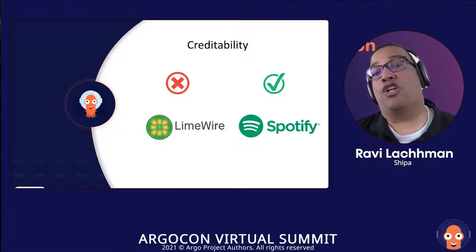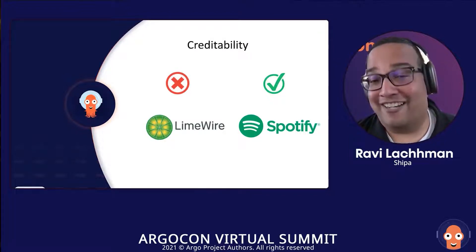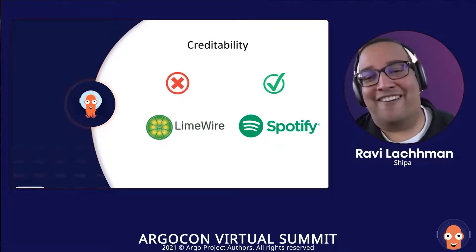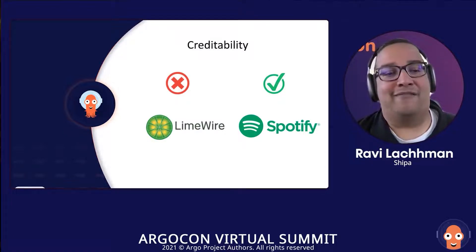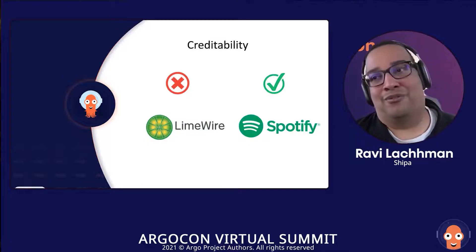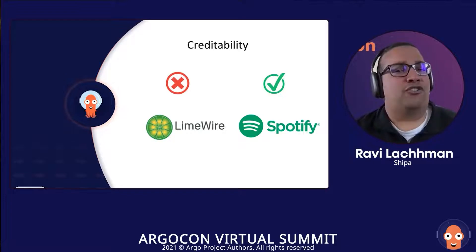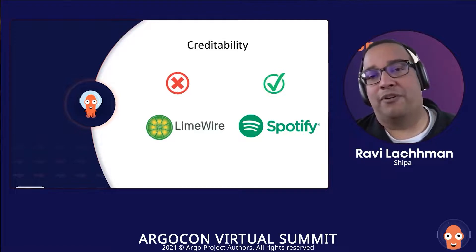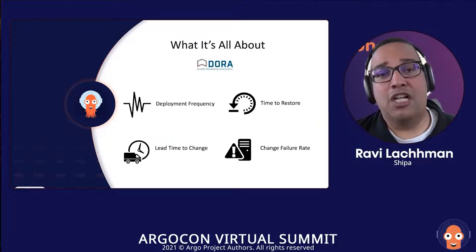Then credibility — someone has to trust your software and your solution to use it. If it's something very buggy, or in this example something very virus-laden, would you rather use LimeWire or Spotify to get your music? Most people would go with Spotify today. Is your platform robust? Is it there when someone needs it? If your build system is always down, clogged, or things are taking forever, your credibility could be damaged. These three pillars — usability, findability, credibility — are the core pillars of developer experience.